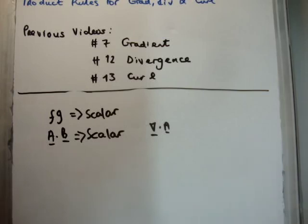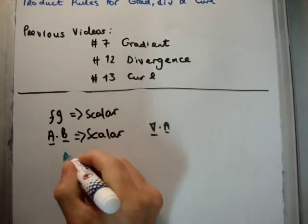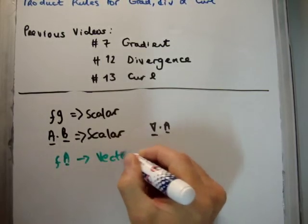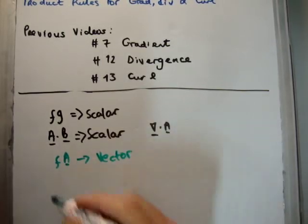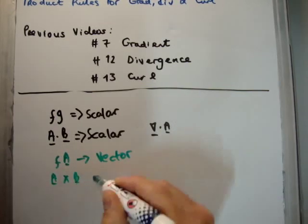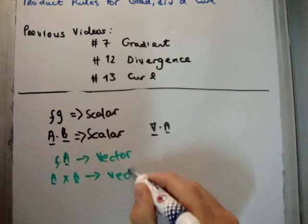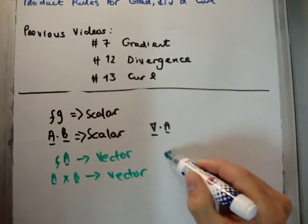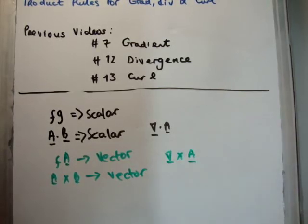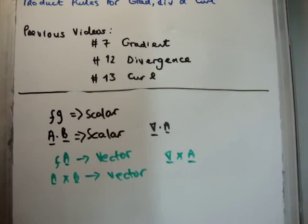Also, there are two ways to make a vector. You could multiply vector a by a scalar f and that will give you a vector. Or you could take the cross product — the cross product of vectors a and b also gives you a vector. Since the curl of a vector a also gives back a vector, this makes constructing the product and quotient rules that bit more difficult.